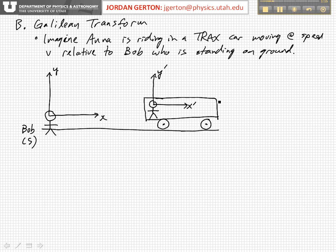The Trax car is moving with velocity V with respect to — this is Anna and her frame S prime, just to be clear.